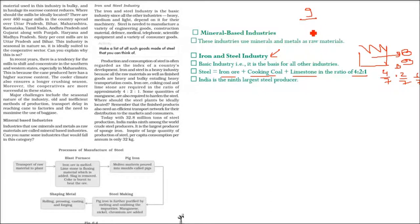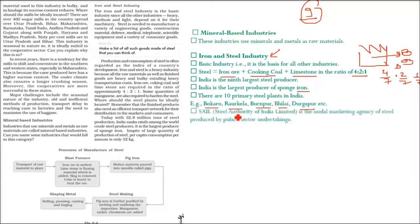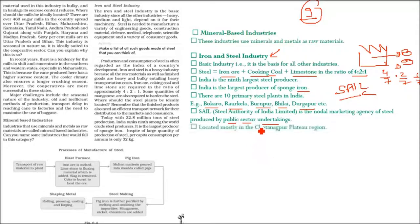India is the largest producer of sponge iron. There are 10 primary steel plants in India. Major plants include Bhilai, Rourkela, Burnpur, Durgapur, and Bokaro. Steel Authority of India Limited (SAIL) is the nodal marketing agency of steel produced by public sector undertakings. Most of these plants are located in the Chota Nagpur region because raw materials are easily available there. India's current steel production is about 32.8 million tons and we rank ninth, but per capita consumption is only 32 kg per annum.